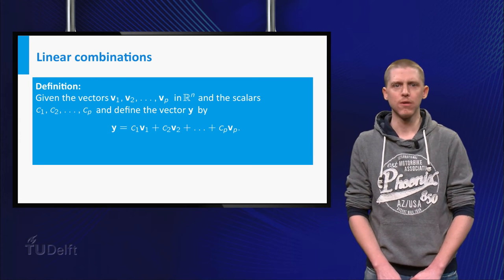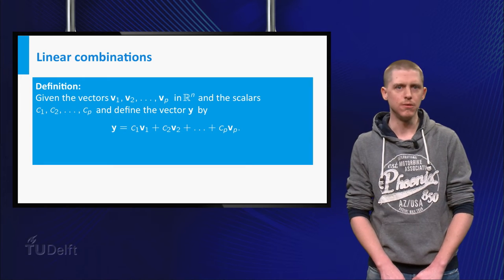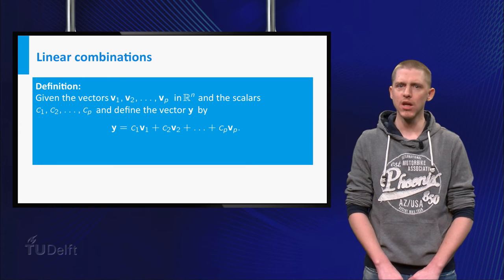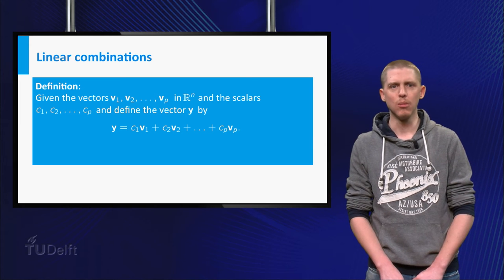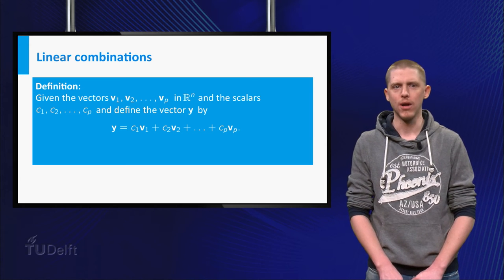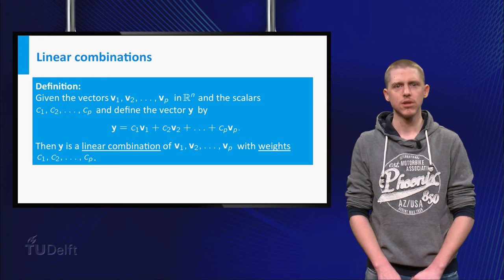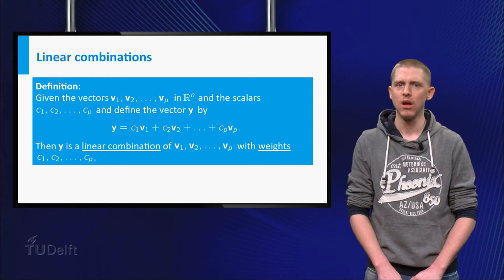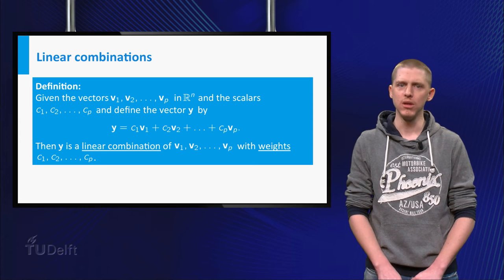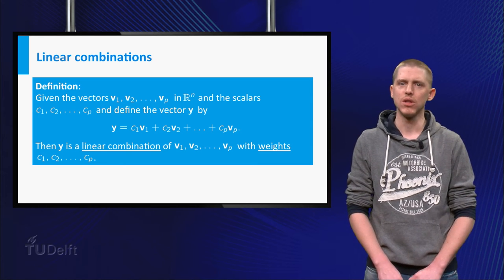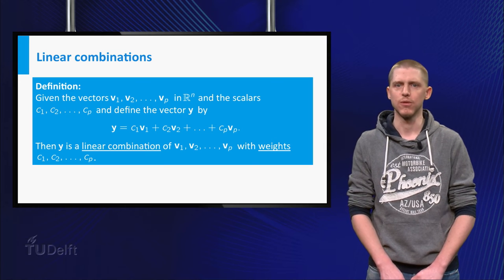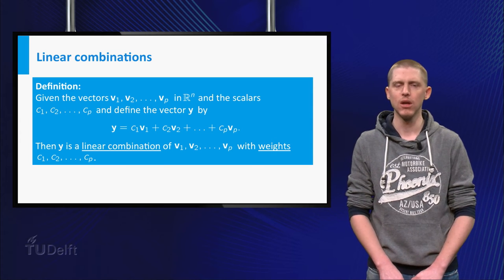If we have a finite number of vectors v1, v2 up to vp in Rn, and the same number of scalars c1, c2 up to cp, you can combine these to form a new vector y. Such a combination of vectors is called a linear combination of v1 up to vp with weights c1 up to cp. Note that you do not have to write brackets because of the properties of scalar multiplication and vector addition.